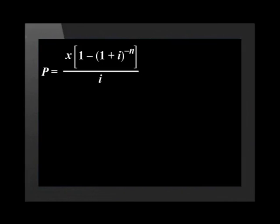We are going to use the present value formula to determine the equal monthly installment x. We have two options: we can first rearrange the present value formula to get x on one side and then substitute the values, or we can substitute the values into the present value formula first and then get x on one side of the equation.